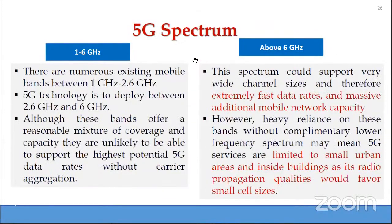Coming to 5G spectrum: up to 4G, mobile bands between 1 GHz and 2.6 GHz were used. 5G will also use from 2.6 to 6 GHz. Although the sub-6 GHz or microwave frequencies offer a reasonable mixture of coverage and capacity, they are unlikely to support the highest potential 5G data rates.